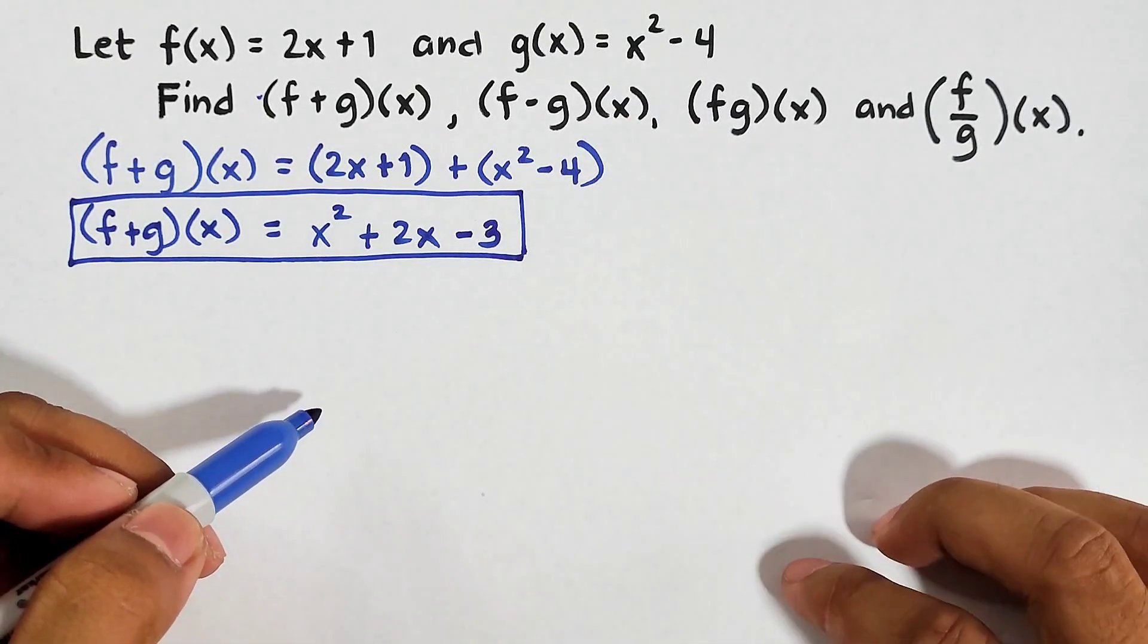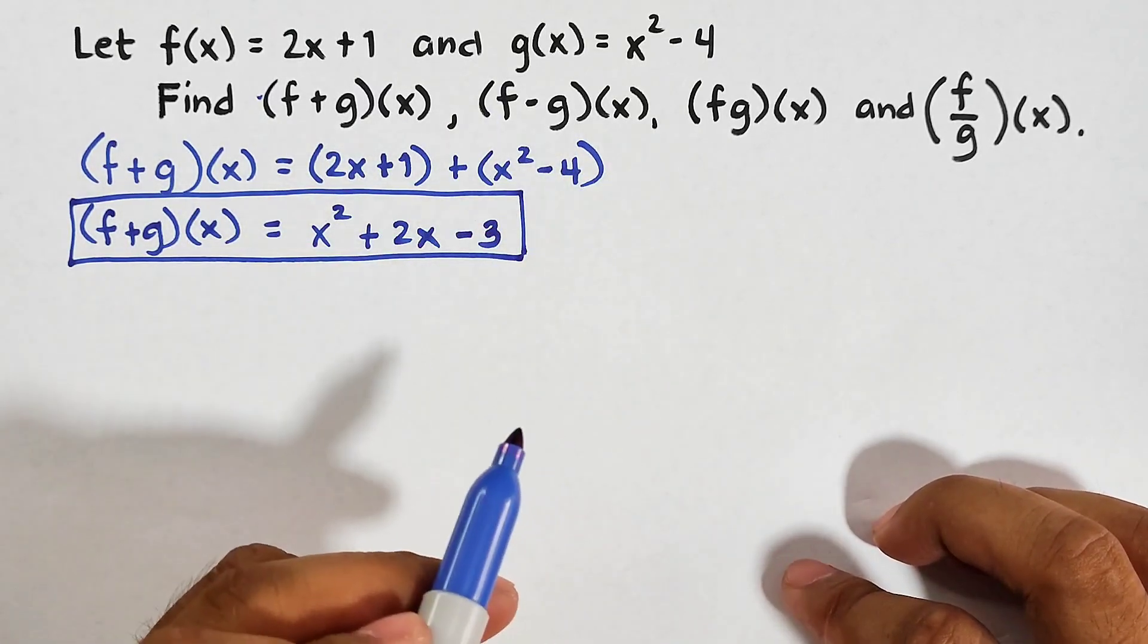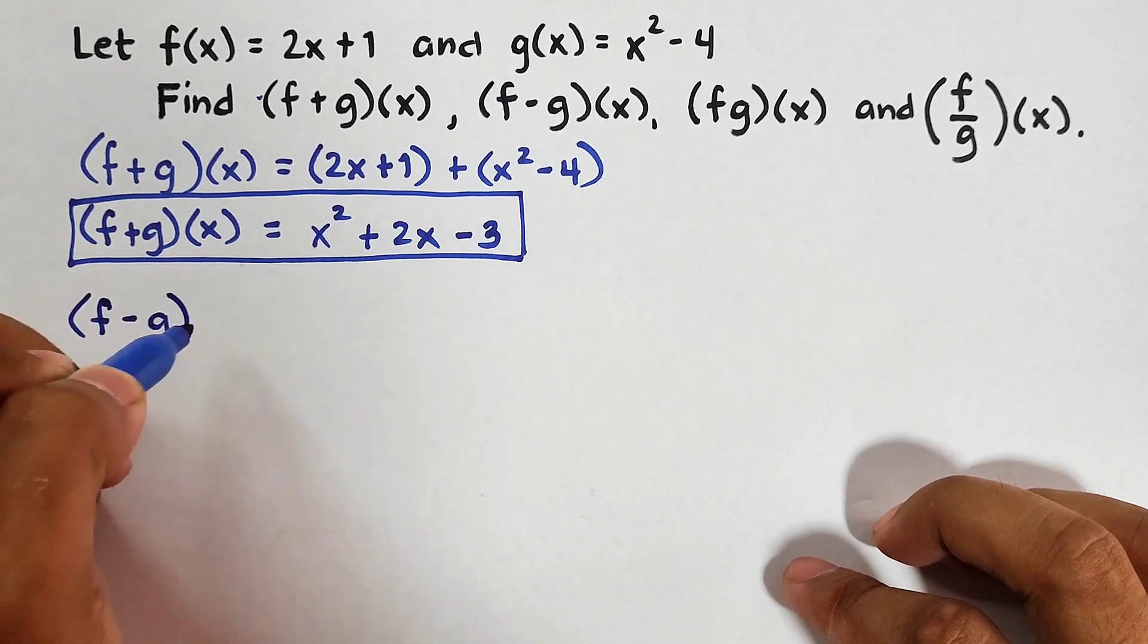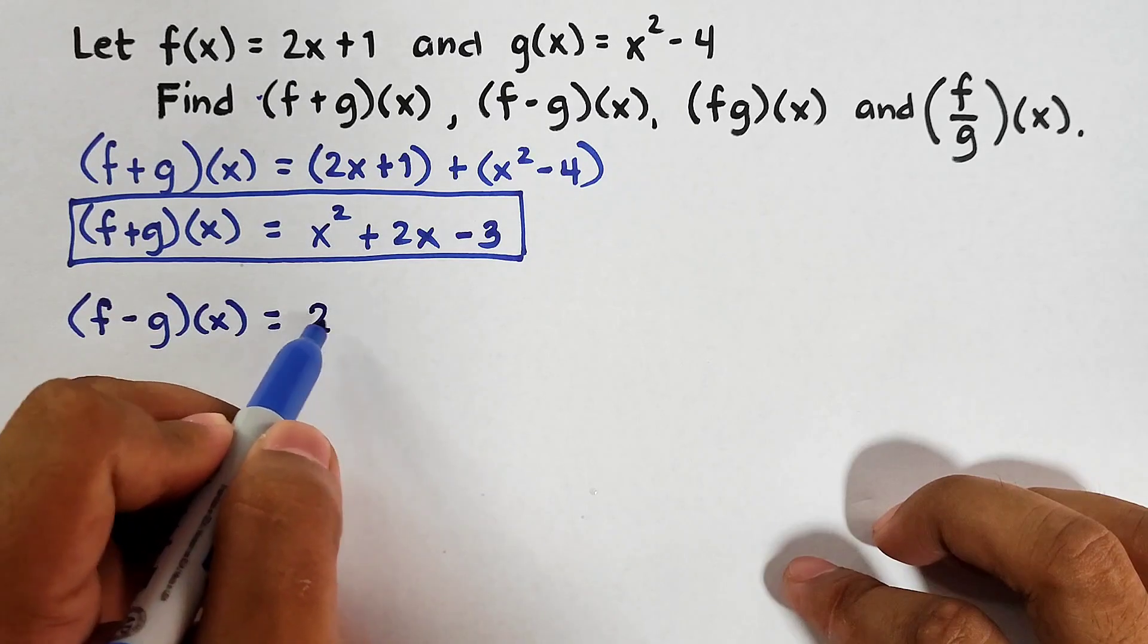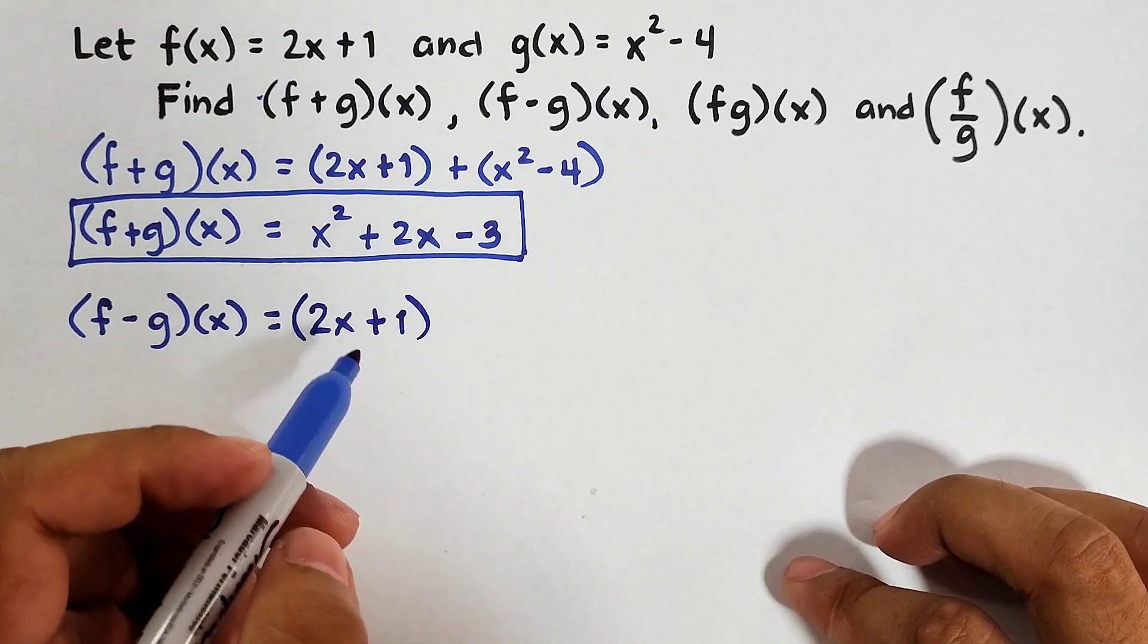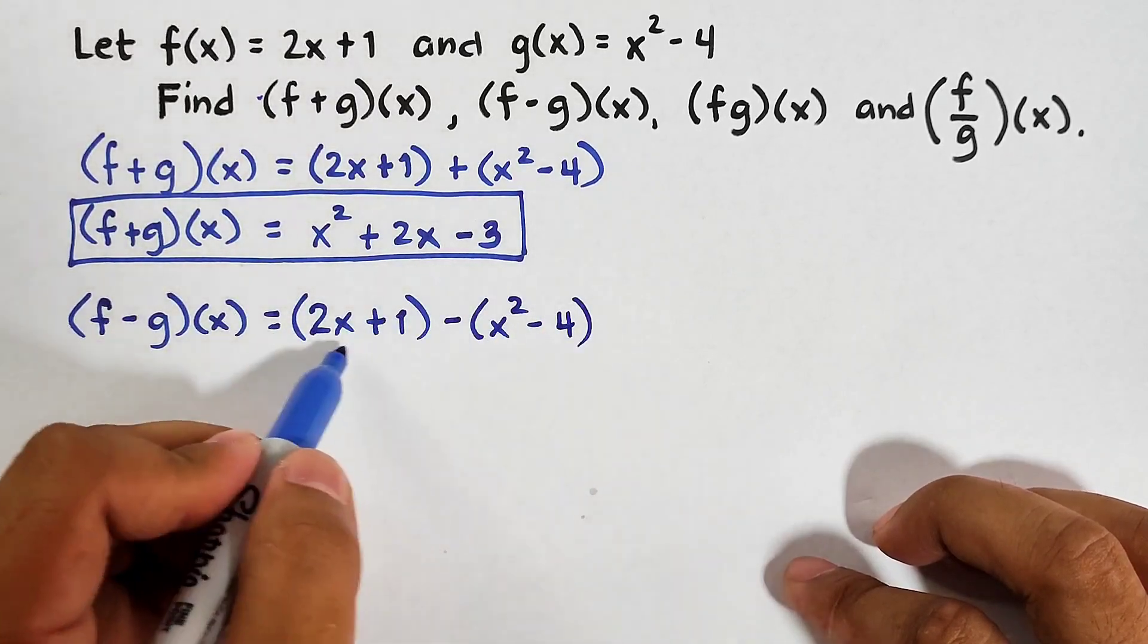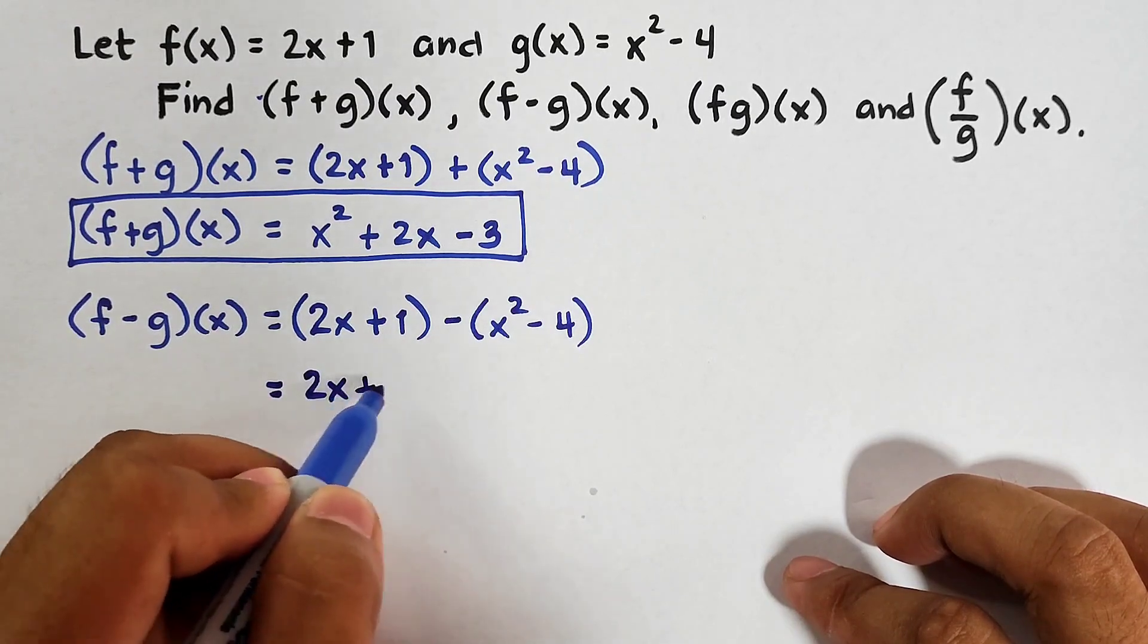Let's proceed with the second operation. We have f - g(x). In this part, it's very important that the arrangement is correct. So let's figure it out. We have f - g(x). We will start with f, that is 2x + 1, and close it by parentheses. Then minus your g, which is x² - 4. For the first part, what we need to do is to copy 2x + 1.